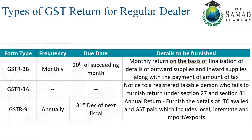Based on your GSTR 1 filing, you declare your liability. You then prepare GSTR 3B, which must be filed by the 20th of every month. I am showing the 28th as a reference date, as it may differ slightly by state — some states have the 22nd, some the 28th.